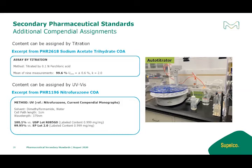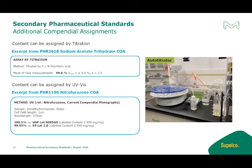For example, if you are using the secondary standard for a titration application, the certified value by titration may be more appropriate than the mass balance value. Content can also be assigned by UV at 375 nanometers in some monographs, following the USP monograph. Further traceability to the primary standard includes FTIR comparison for identification, where the secondary standard spectra are compared to the current BP, USP, and EP batches. The spectra are stacked in the certificate of analysis so that comparison can be made very easily.